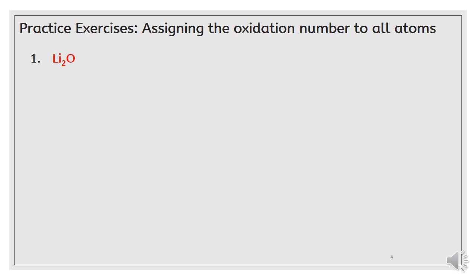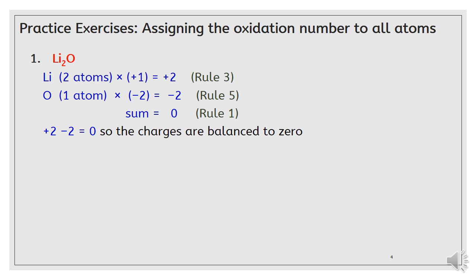Example number one, lithium oxide, Li2O. Lithium: two atoms multiplied by +1, the oxidation state of lithium, equals +2. This is rule number three. Oxygen: one atom multiplied by -2 equals -2. This is rule number five. Plus 2 minus 2, the summation equals zero. This is rule number one. And so, the charges are balanced to zero.